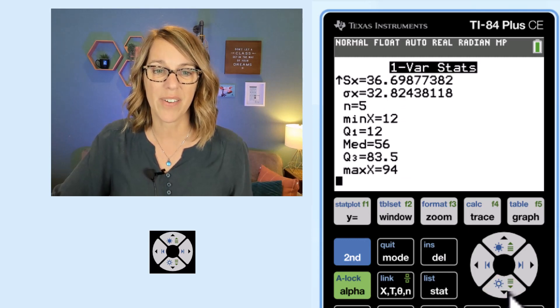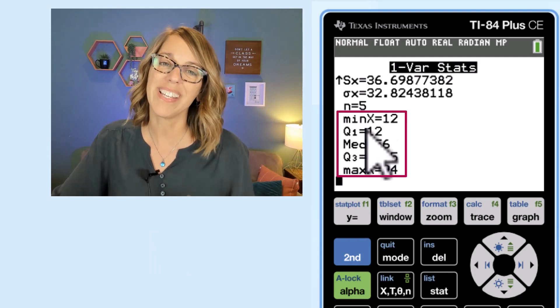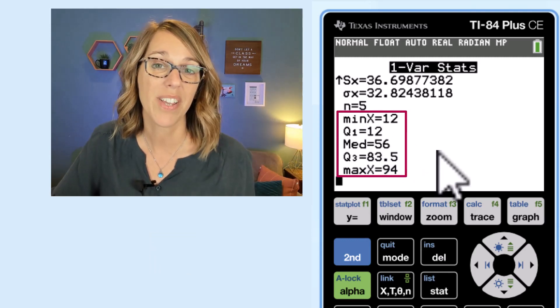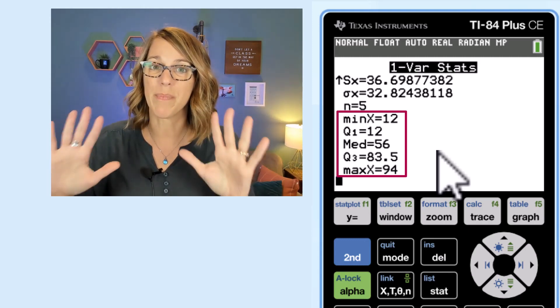I'm going to down arrow until I get through all of them and then you can see that what's here at the bottom is that five-number summary. We've got the minimum, quartile one, median, quartile three, and the maximum.